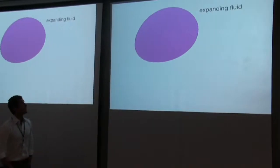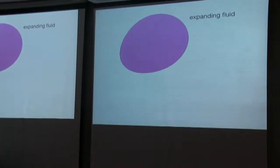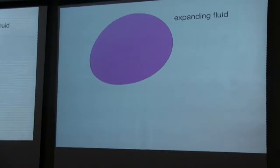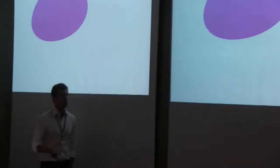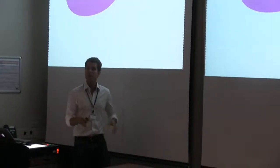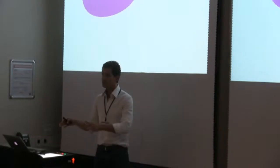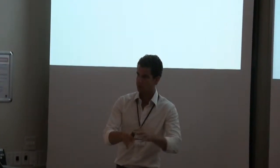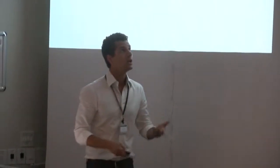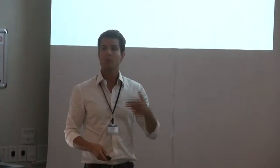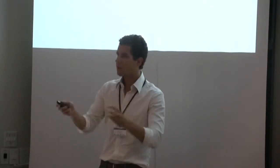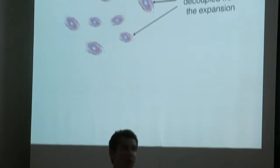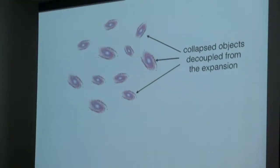One aspect of this problem is the question of the fluid description of matter. Some approaches to back reaction — in particular the one popularized by Thomas Buchert — rely on the fluid description of matter: how a homogeneous fluid differs from an inhomogeneous fluid in terms of time evolution. But there is another aspect, which is what we call the fluid — it is just smoothing a set of particles or collapsed objects that are decoupled from the expansion, like galaxies or clusters of galaxies.